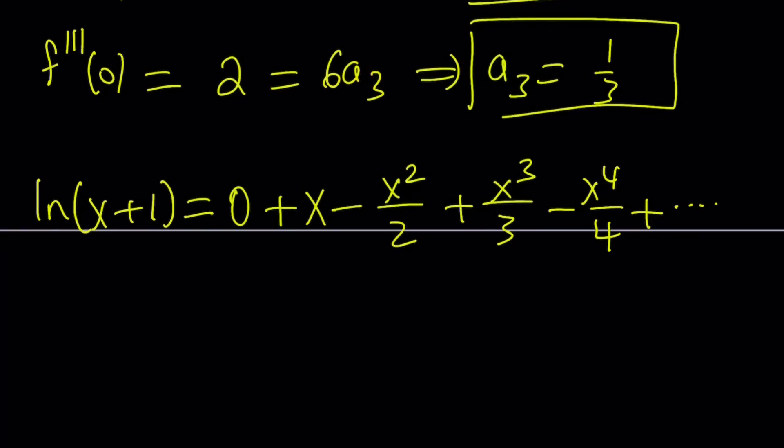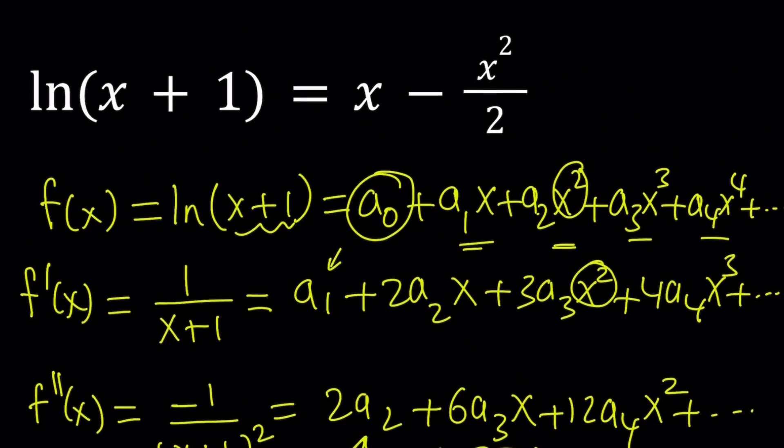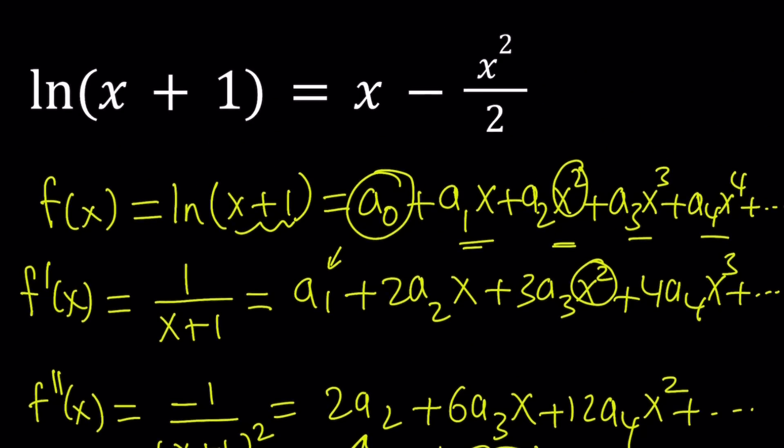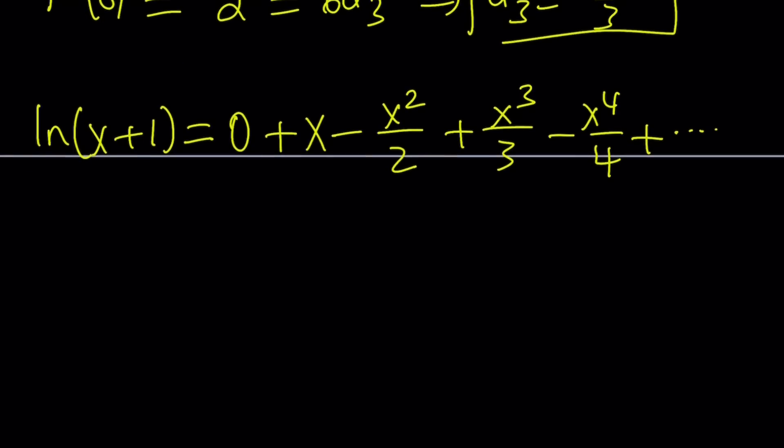Remember, the original equation gave us ln(x+1) equals x minus x² over 2. So I'm going to go ahead and replace ln(x+1) with x minus x² over 2, because that's what's given in the original problem. And the right-hand side, remember, is an infinite polynomial.